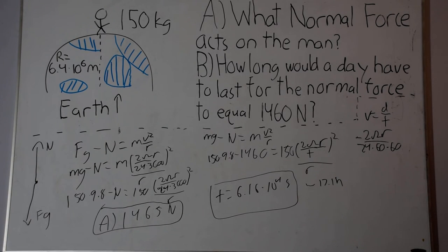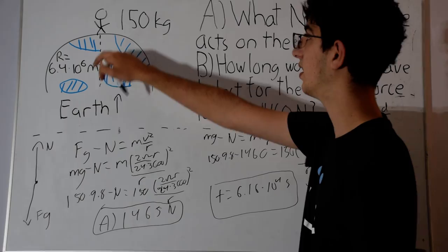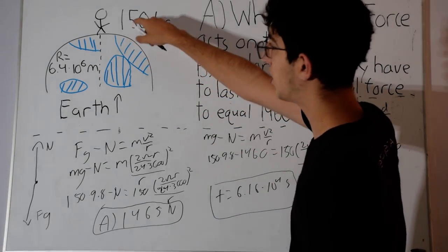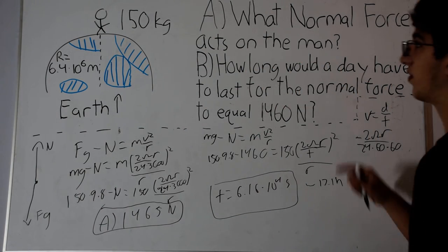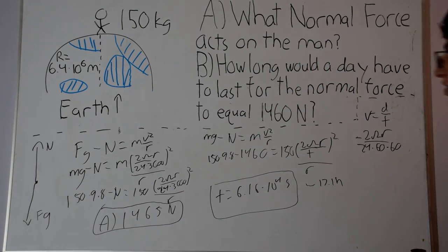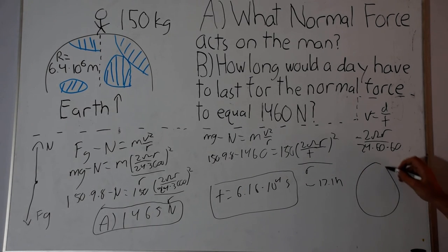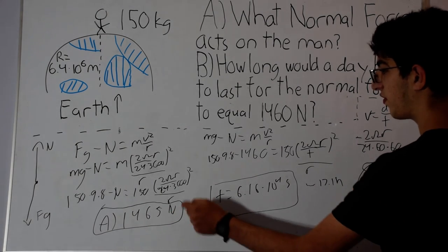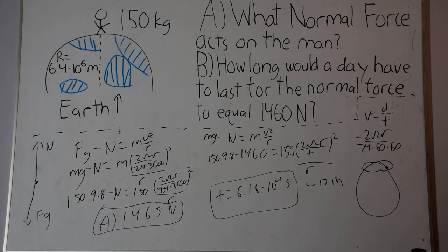Now just one word of caution about this question. I assumed that this man is standing on the equator, so he is truly going 2πR over one day. But if you think about it, if a person was not standing here but instead standing here, he would be going a much smaller distance around the earth in one day. So this change in normal force from weight is going to have a much smaller effect.